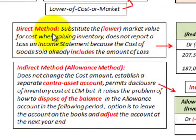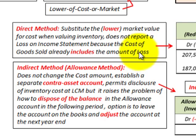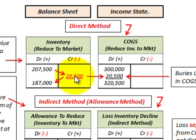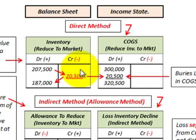With the direct method, you substitute the lower market value for cost when valuing your inventory. It does not report a separate loss on the income statement because the loss is already included in the cost of goods sold. On our balance sheet, the inventory account was sitting at cost of $207,500. We credit our inventory account by $20,500, which reduces our inventory down to $187,000 — the market value.